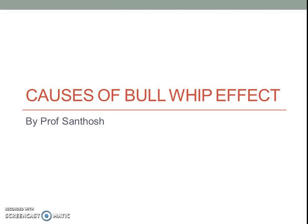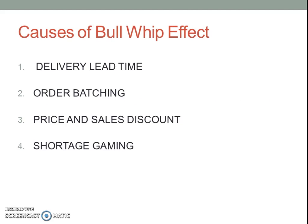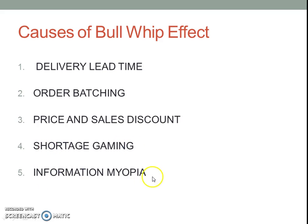Let us examine the causes of Bullwhip Effect. The causes are Delivery Lead Time, Order Batching, Price and Sales Discount, Shortage Gaming and Information Myopia. Let us examine each one of them in detail.